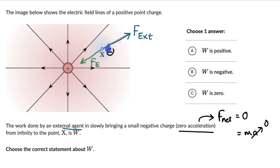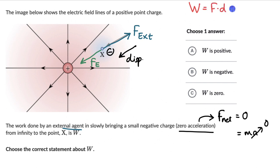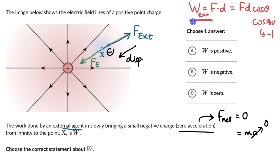To move the negative charge from infinity to point X with zero acceleration, F_external must always be directed opposite to the electrostatic force of attraction. The charge is being brought inward, so the displacement is directed towards the positive charge — inward. F_external and displacement are therefore in opposite directions. Work done equals F · d · cosθ, and here θ = 180°, so cos180° = −1. Therefore, the work done by the external agent is negative — less than zero. You can try more questions from this exercise in the lesson, and if you're watching on YouTube, check out the exercise link in the description.